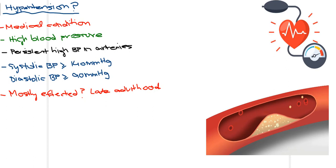Hypertension is a medical condition which in layman's terms is known as high blood pressure. Hypertension mostly develops when there is deposition of plaque in the arteries. When plaque is deposited, the diameter of the artery decreases, disrupting blood flow in these arteries, which leads to an increase in blood pressure — a persistent high blood pressure in these arteries.